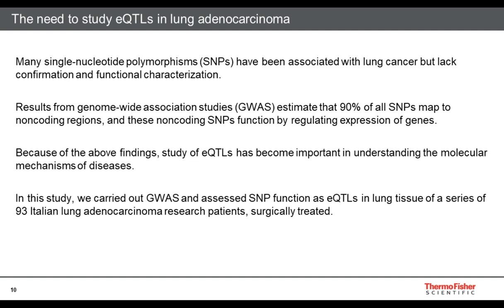To summarize: many SNPs have been found associated with the risk of disease, in particular lung cancer, as well as other cancers and diseases. At the moment, we do not know the mechanism underlying these associations, so they need functional characterization. Results from genome-wide association studies estimate that 90% of all SNPs map to non-coding regions — regions that may act by regulating the expression of a target gene. The modulation of expression of target genes may represent an important mechanism underlying individual differences in disease risk. For these reasons, EQTL analysis has become important in understanding the molecular mechanism of disease. In this preliminary study, we carried out analysis of the whole genome to assess SNP function as EQTLs in lung tissue from 93 Italian lung adenocarcinoma patients surgically treated at hospitals collaborating with our study.